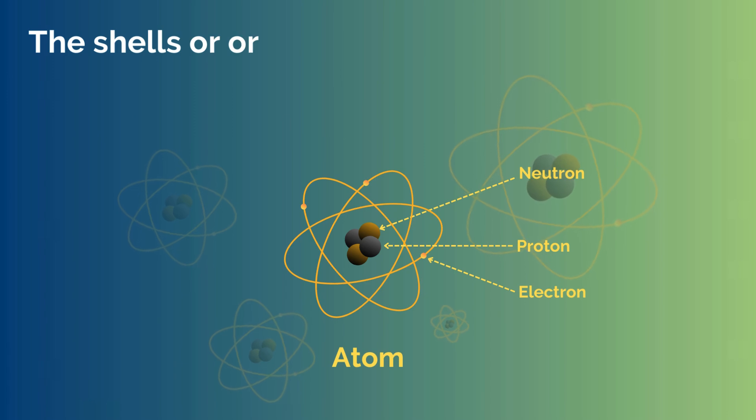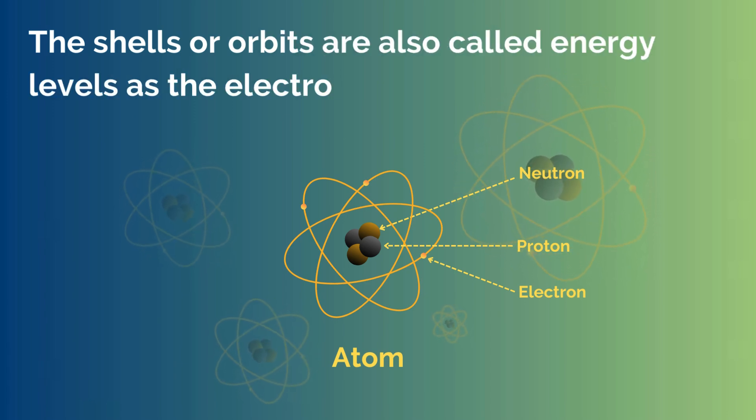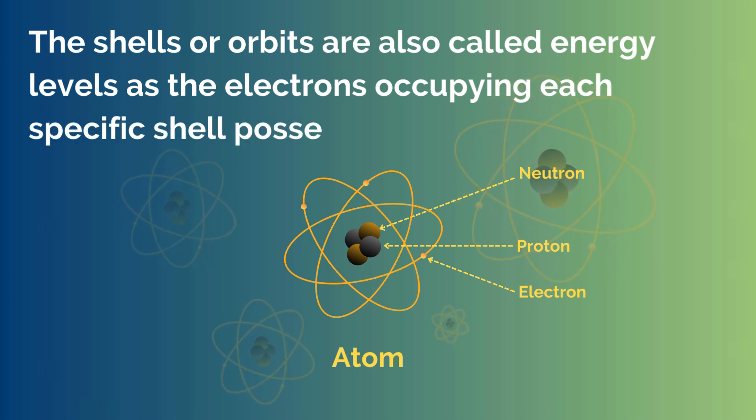The shells or orbits are also called energy levels, as the electrons occupying each specific shell possess a specific amount of energy.